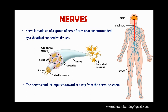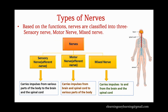Now we are going to discuss about nerves. A nerve is made up of a group of nerve fibers or axons surrounded by a sheath of connective tissue. Many nerve cells are joined together to form a nerve fiber, and these nerves conduct impulses towards or away from the nervous system. Based on the direction of impulse transmission, nerves are classified into three types: sensory nerve, motor nerve, and mixed nerve.